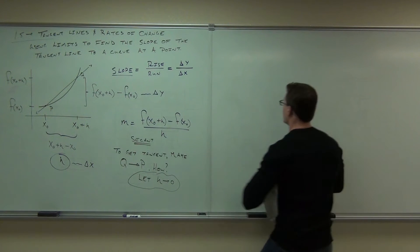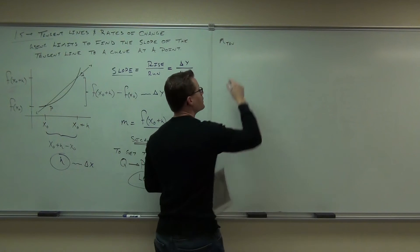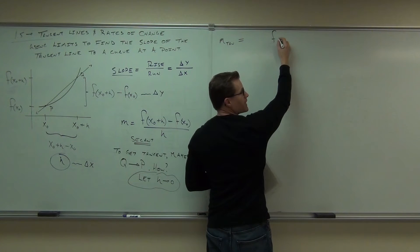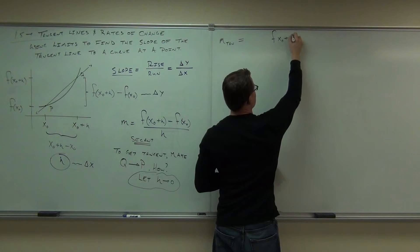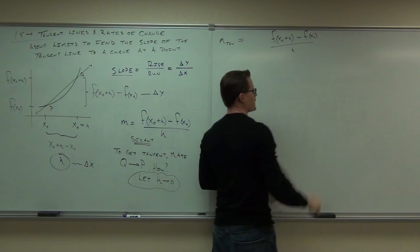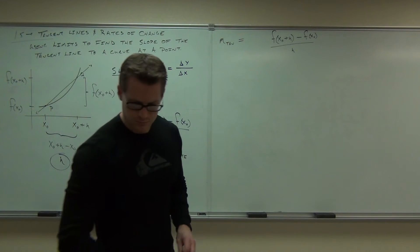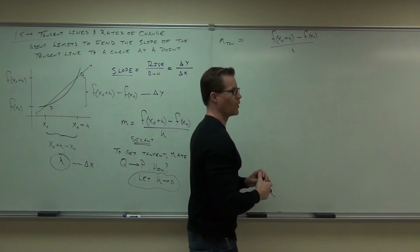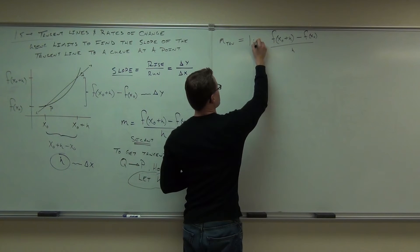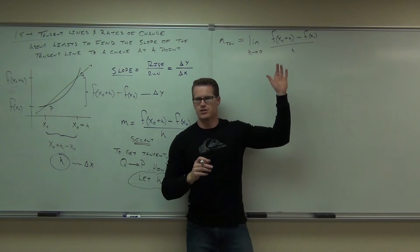So this one's the secant. We want the slope of the tangent line. The slope of the tangent line is going to look almost identical. It's going to have f of x sub 0 plus H minus f of x sub 0 all over H. Only now, what do we want the H to do? So we need a limit.